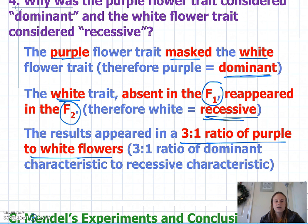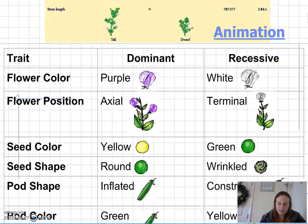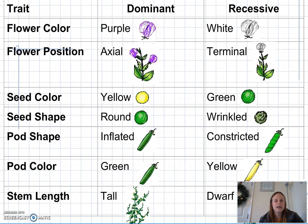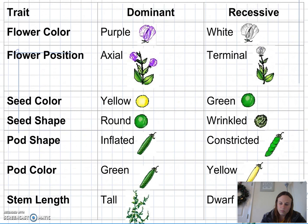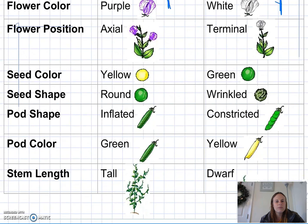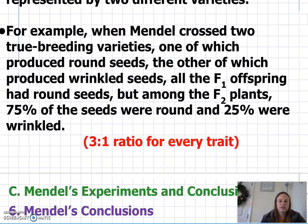Mendel actually looked at seven different traits: flower color, flower position, seed color, seed shape, pod shape, pod color, and stem length. Notice there is only one dominant characteristic and one recessive characteristic for each of these traits. When Mendel did his experiments, he always came up with that three-to-one ratio in the F2 generation — a three-to-one ratio for every trait.